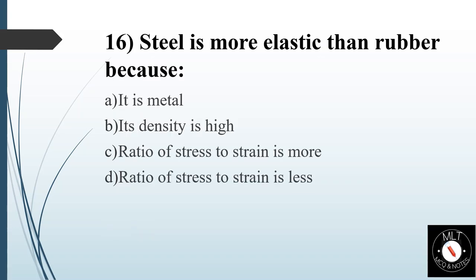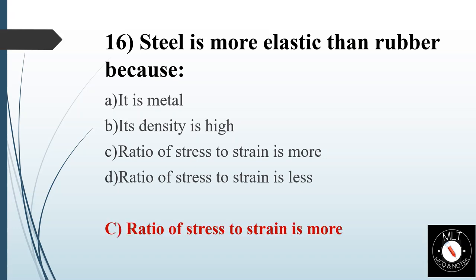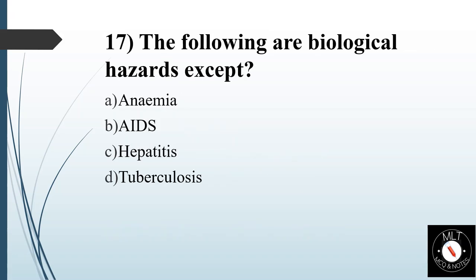Sixteenth question. Steel is more elastic than rubber because. Option A: It is metal. Option B: Its density is high. Option C: Ratio of stress to strain is more. Option D: Ratio of stress to strain is less. Answer is Option C: Ratio of stress to strain is more.